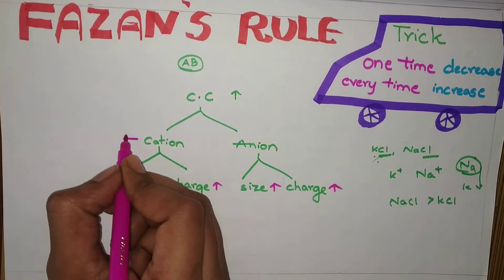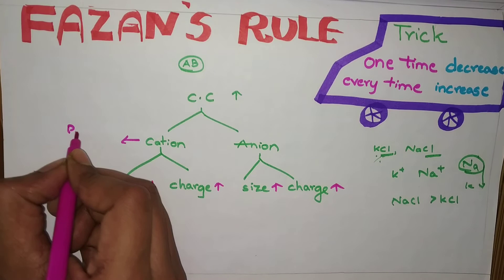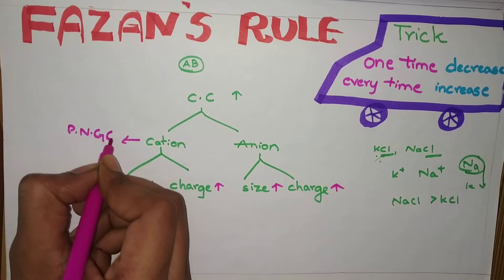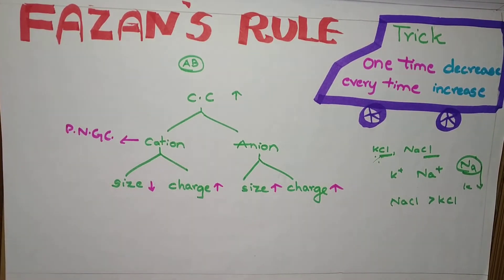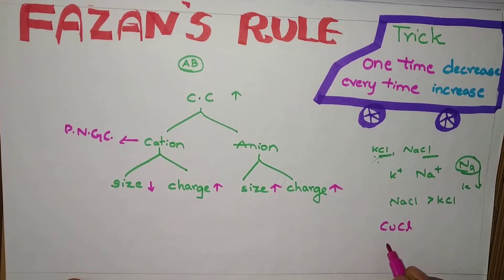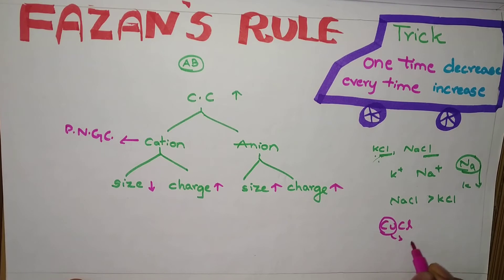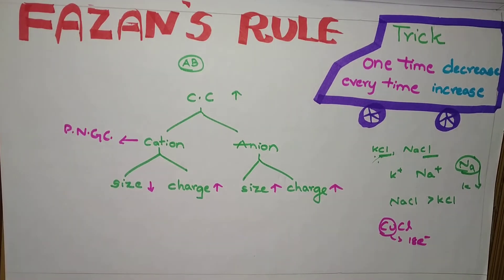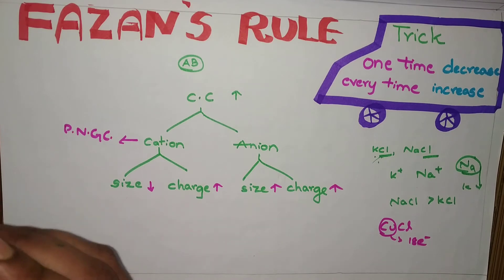Here, another important thing is there. That is PNGC, Pseudo Noble Gas Configuration. It talks about, suppose here, CuCl is given. Copper chloride is given. In this copper, it has 18 electrons. That is Pseudo Noble Gas Configuration. I will give the examples.